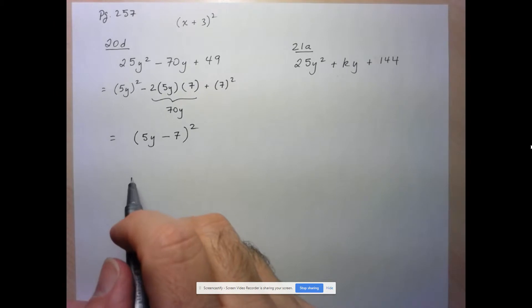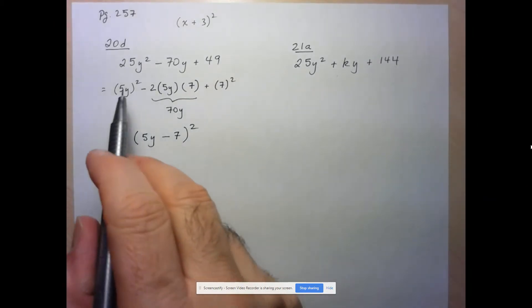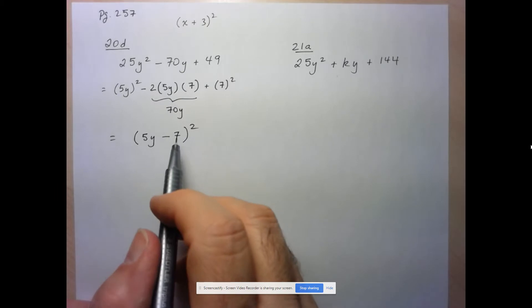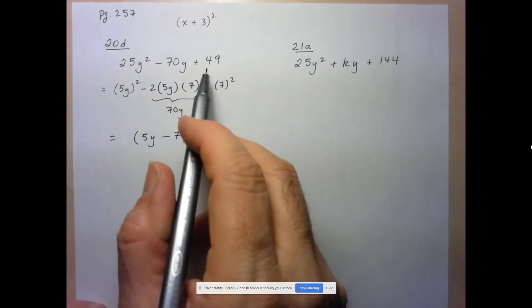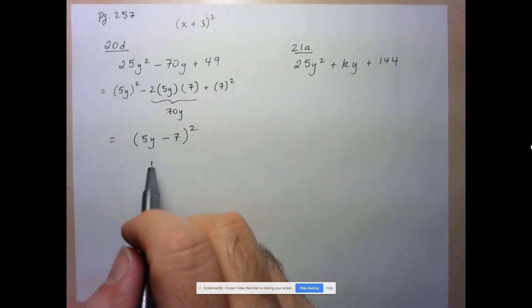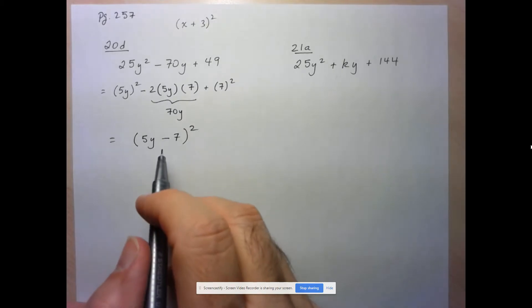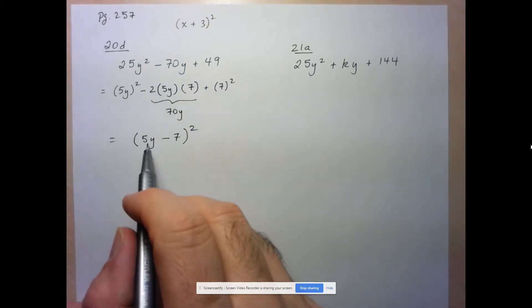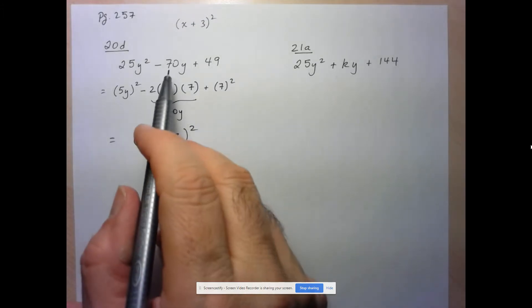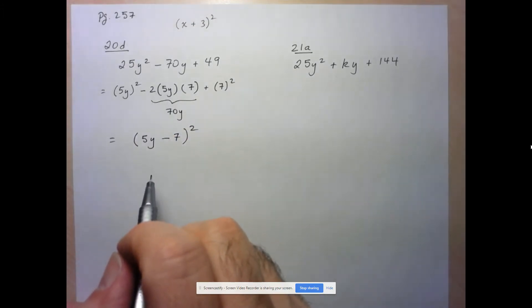And let's check if this works out. Square the first, so 5y squared is 25y squared. Square the last, negative 7 squared is positive 49. And twice the product of first and last, so 5y times negative 7 is negative 35y times 2 is negative 70y.